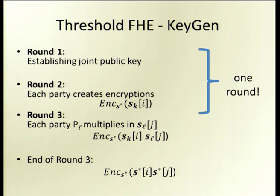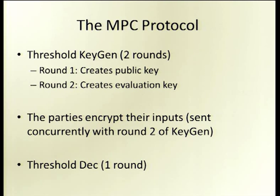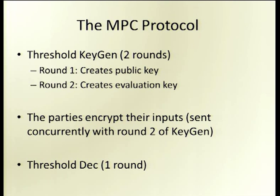In the paper we show how to combine rounds one and two, giving two-round key generation total. So the overall MPC protocol has two-round threshold key generation: in round one, parties create the public key plus information for the evaluation key; at the end of round two, they finish creating the evaluation key. Since the public key is ready after round one, the parties can encrypt their inputs concurrently with round two of key generation. After round two, all parties know the public key, evaluation key, and encryptions of all other parties' inputs. Threshold decryption takes one additional round, giving only three rounds total for the MPC protocol.